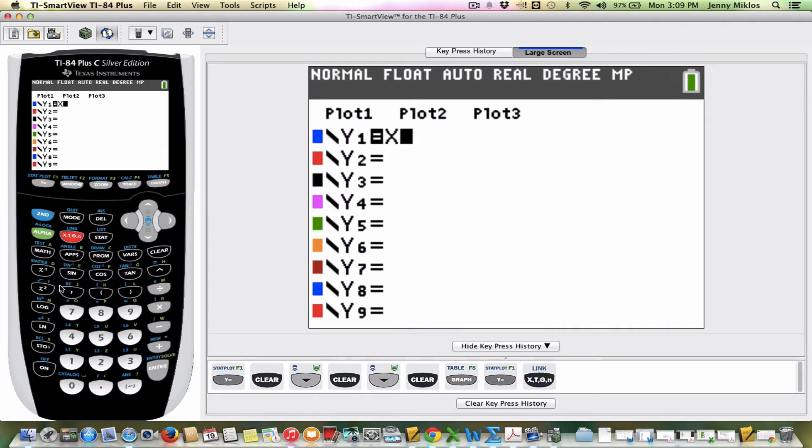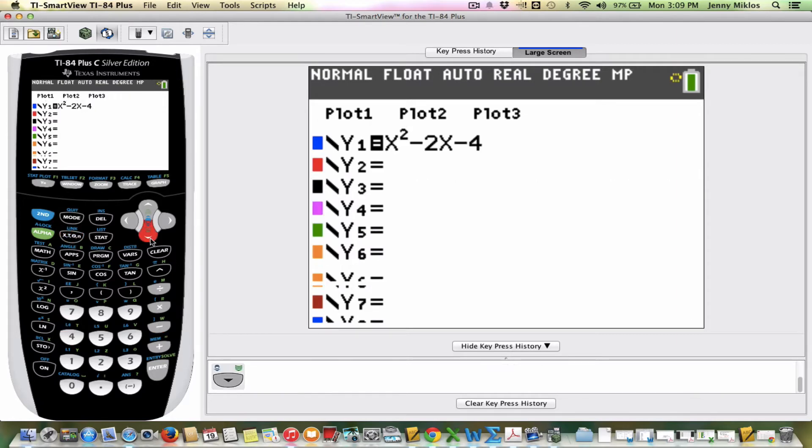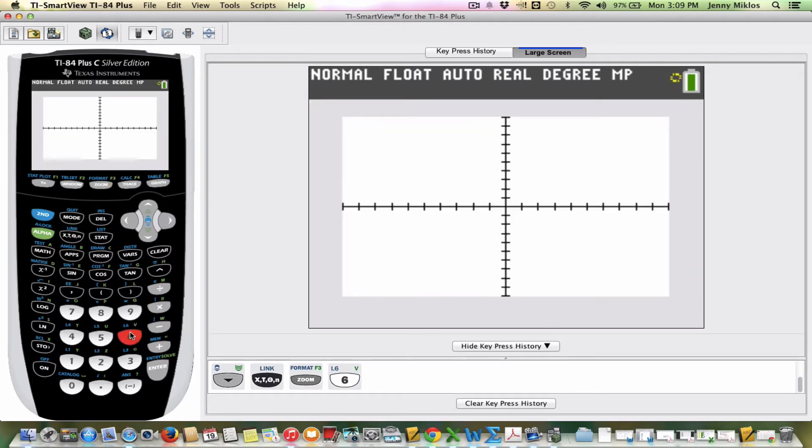So I'm going to type in x squared minus 2x minus 4. And then my second function is going to be y equals x. And I'm going to press zoom 6 here just to show us a picture of what this looks like.